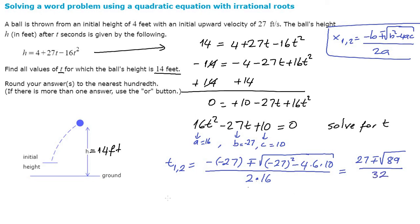So these are the two values of t. t1 would be equal to 27 plus square root of 89 divided by 32. If you use your calculator, you will be able to see that this is going to be equal to 0.5489. I already did that before.